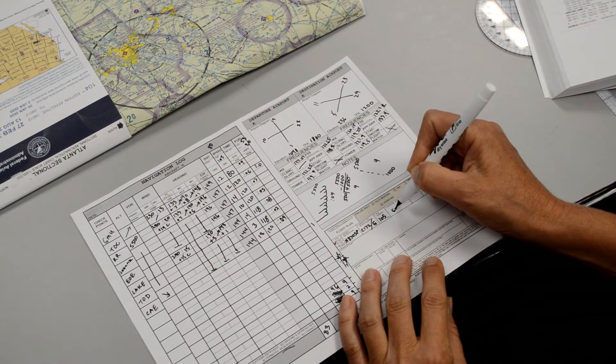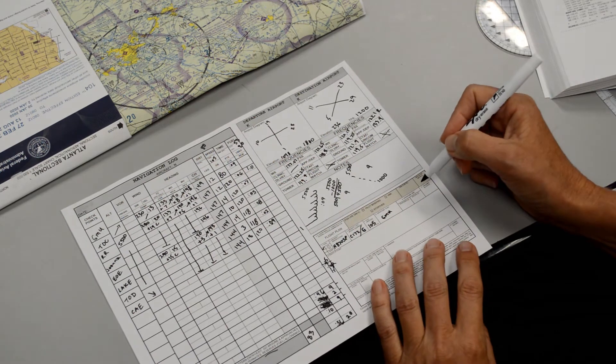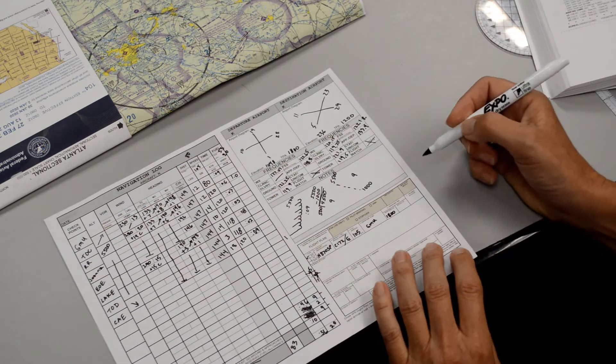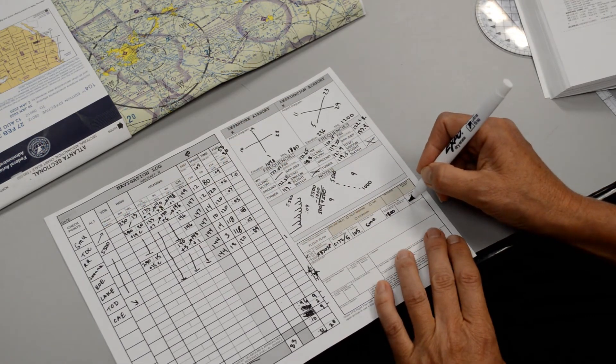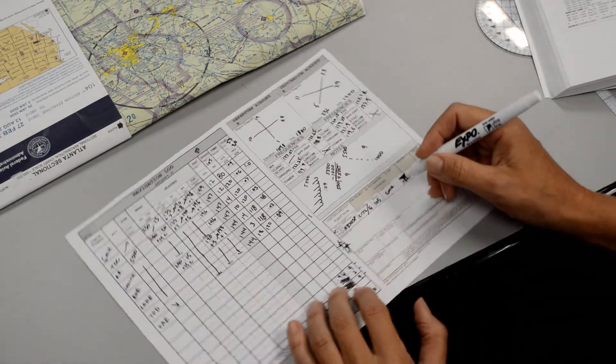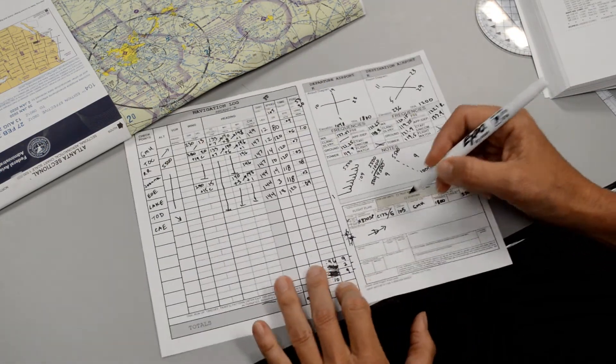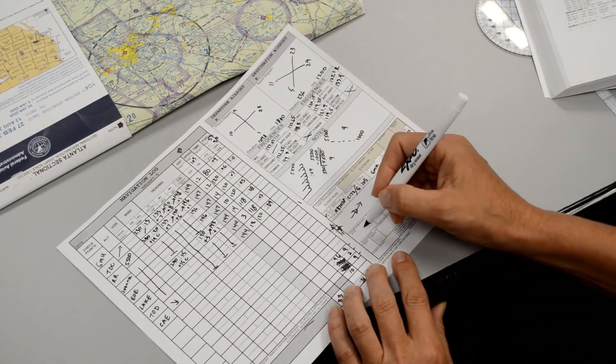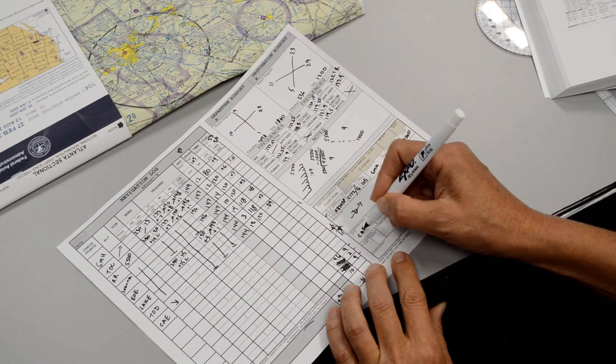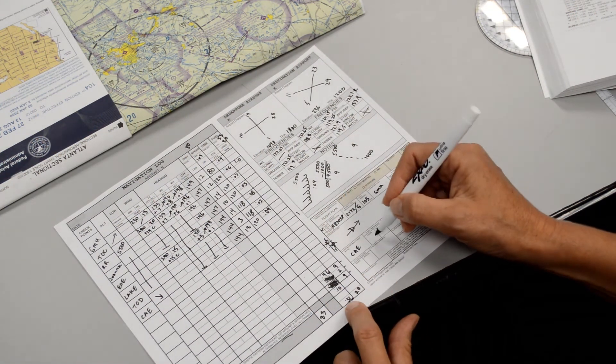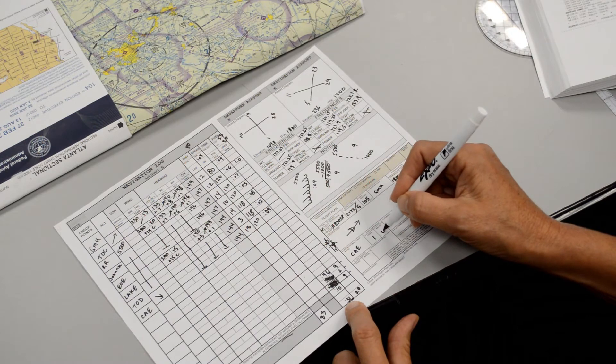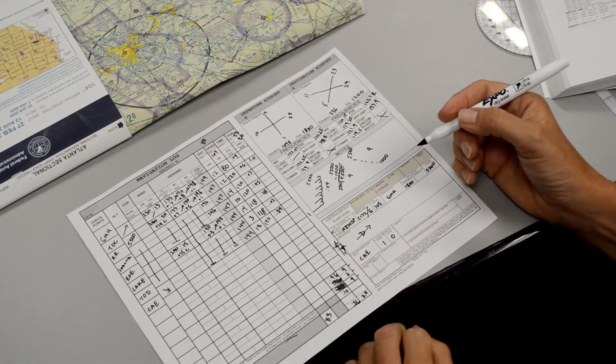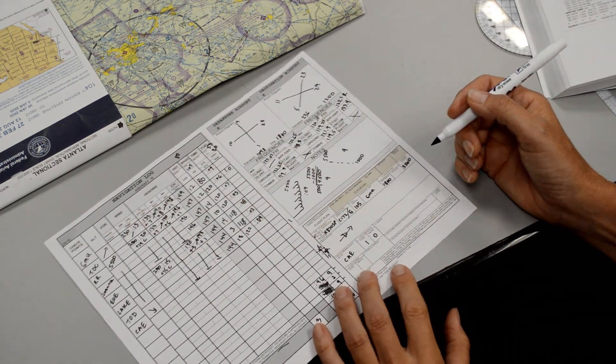Departure point will be Golf Mike Uniform. The time we expect to depart at 1800 Zulu. The cruising altitude is 5500. The route of flight is just direct, so we can write this quick symbol to mean direct if we want, or we can write the word direct out, it doesn't matter. The destination is going to be Charlie Alpha Echo, and we expect basically 1 hour and 0 minutes en route. Could I have put 56 minutes? Sure. But 1 hour, we're just kind of rounding it, and I'm sure that'll work out just fine for us in the flight service station.